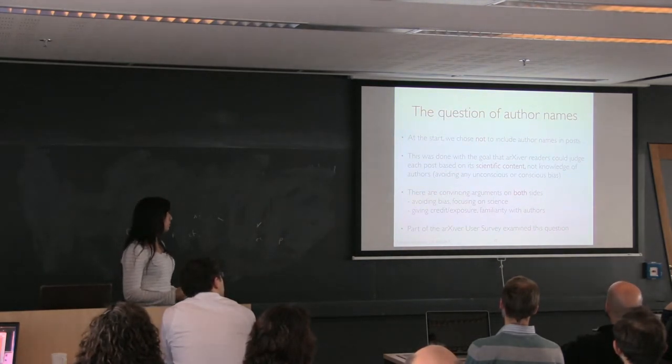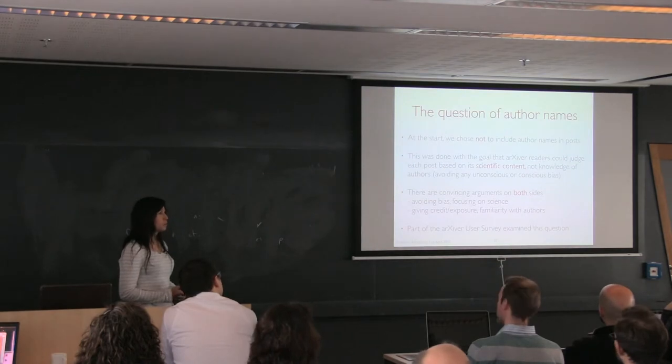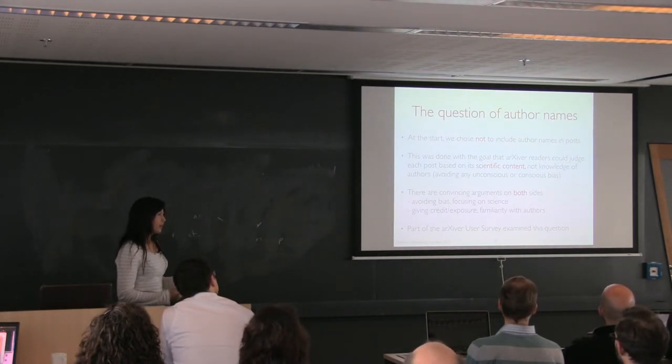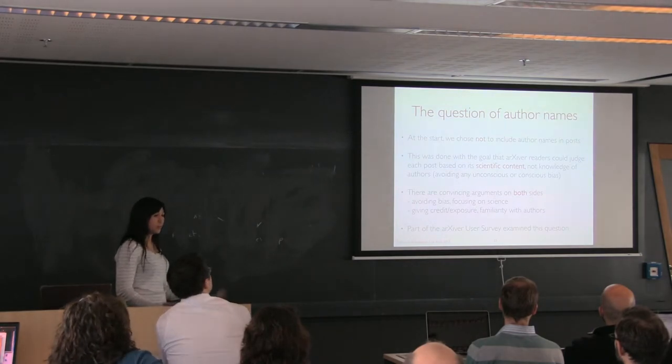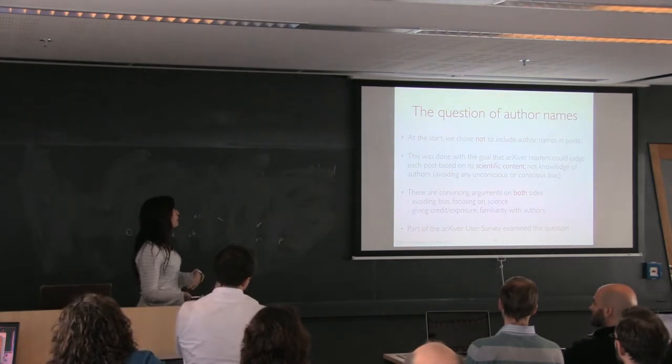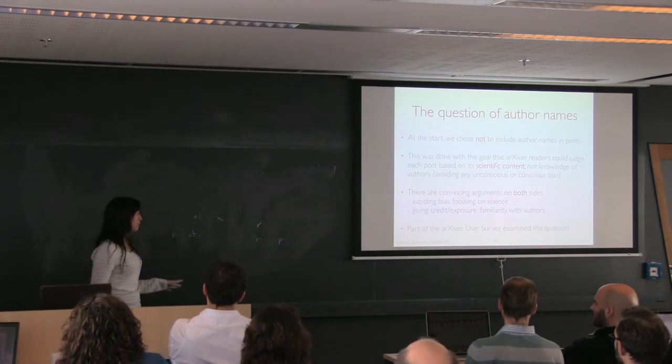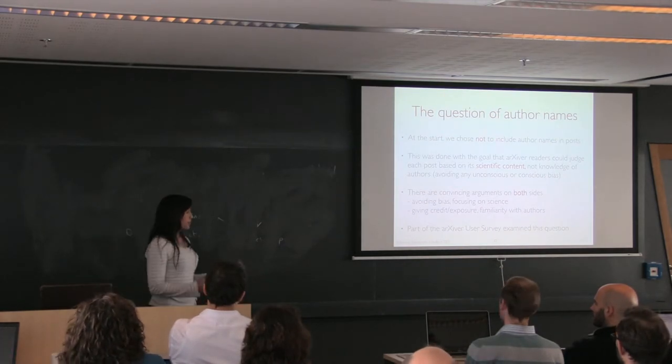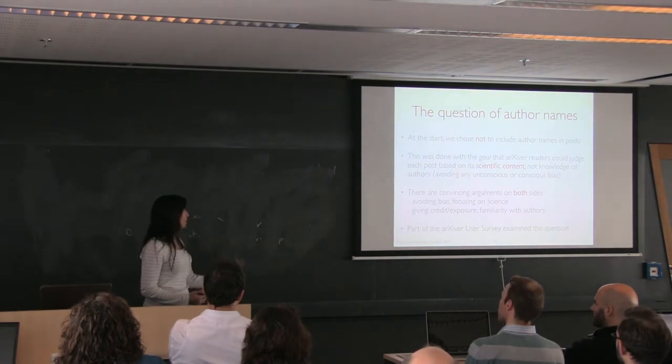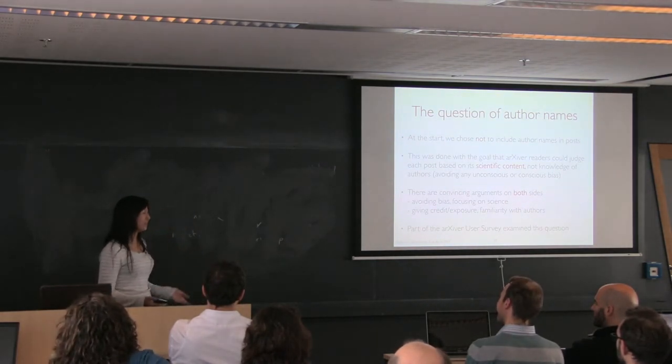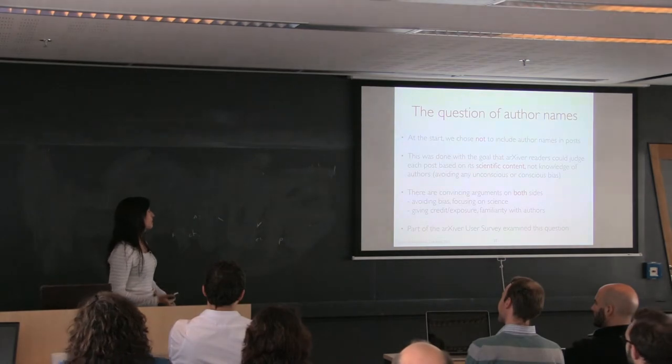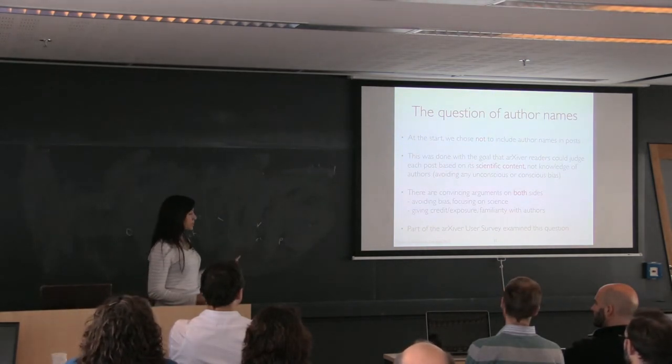The idea of author names basically was when we first started, we didn't include author names because we wanted the content to be the priority. Sometimes people see papers by certain people and then they're like, oh I want to read it, I don't want to read it. So we wanted to take out that bias so that your initial judgment would be just what the paper was about. There are arguments on both sides of this. This is actually when we posted on Facebook, that was the biggest debate that went on about the author names, so that was unexpected controversy.